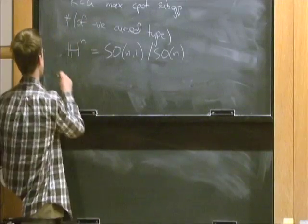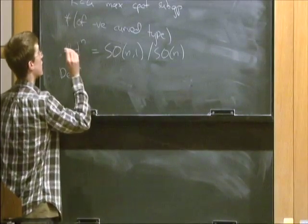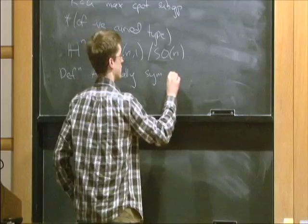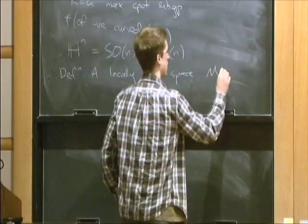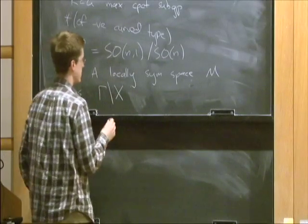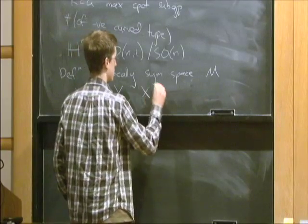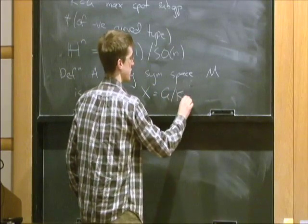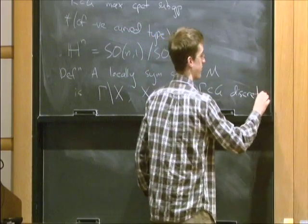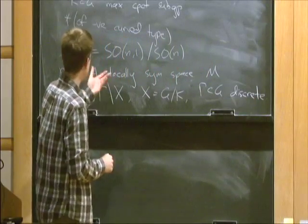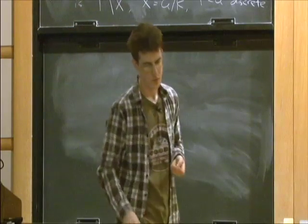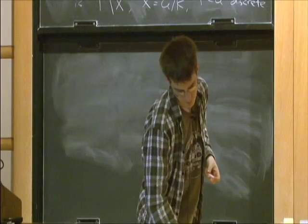Having defined that, the second definition I can make is a locally symmetric space. M is the quotient of a globally symmetric space by some discrete group of isometries. So for X globally symmetric and gamma in G discrete. For example, all hyperbolic manifolds are examples of locally symmetric spaces.